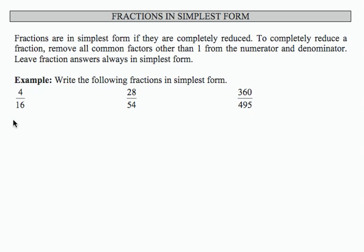So for the first problem, let's write 4 over 16, and what we're looking for are common factors between 4 and 16. Well, I can write 4 as 4 times 1, and I can write 16 as 4 times 4. So 4 is a common factor of both 4 and 16. 4 over 4 is a form of 1. I can remove the 4 over 4, and so 4 over 16 in completely reduced form is 1 over 4.